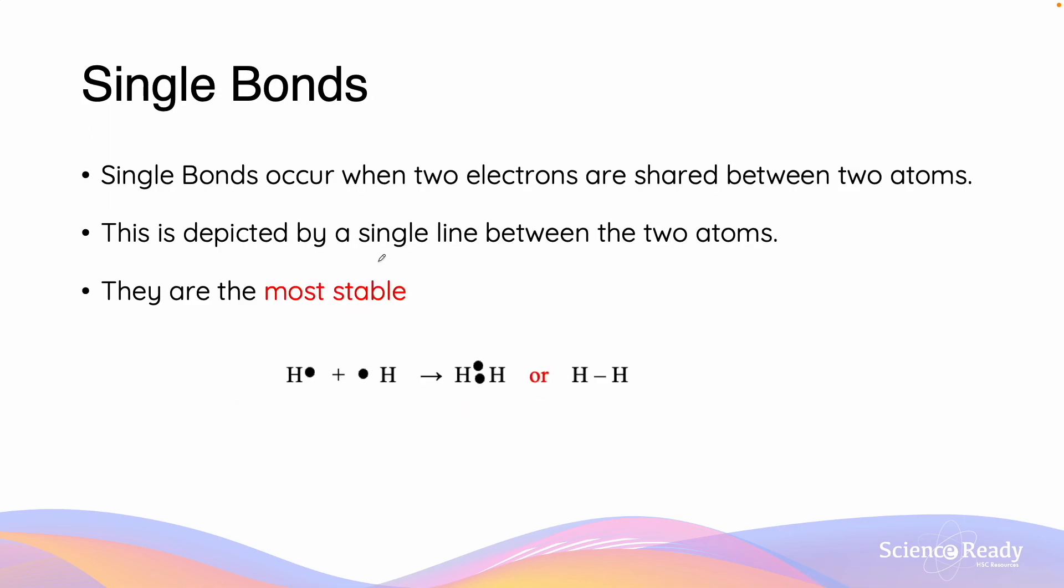Single bonds occur when two electrons are shared between two atoms. This is depicted by a single line between the two atoms. They are the most stable. So here we have hydrogen with its one valence electron.